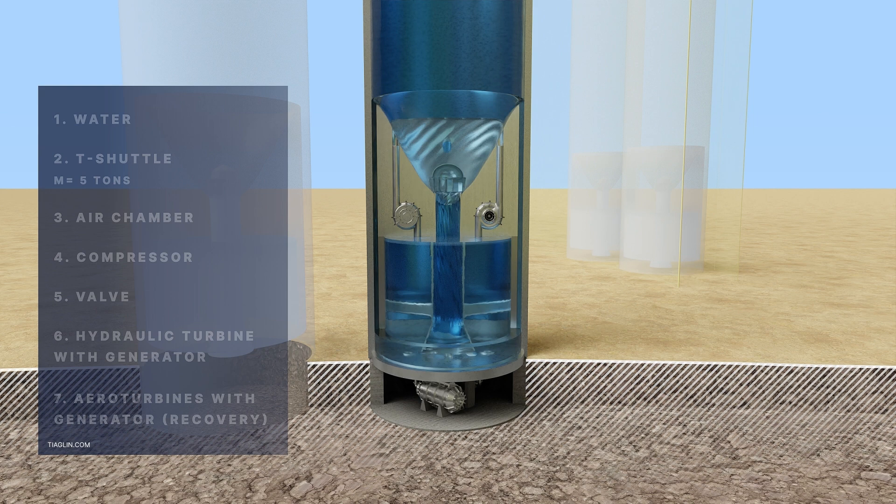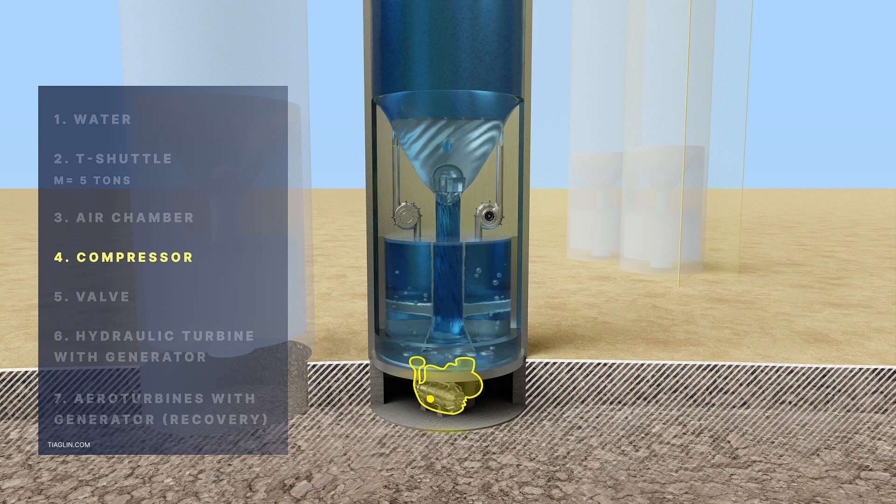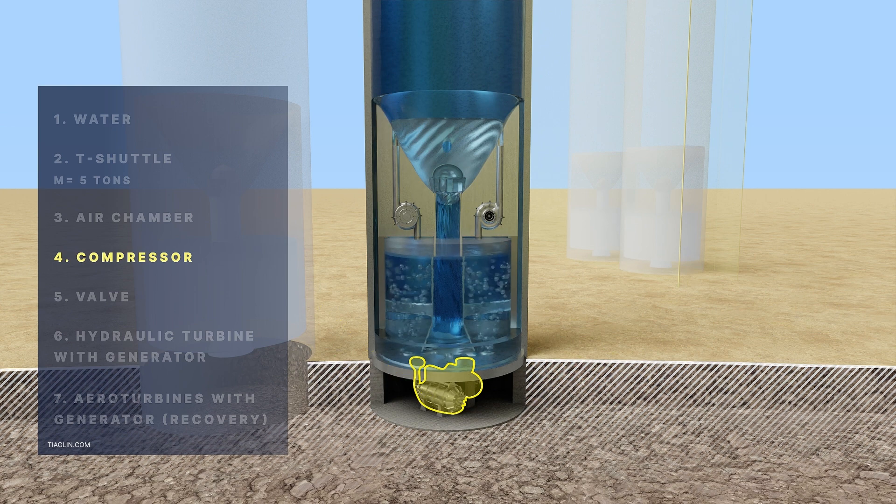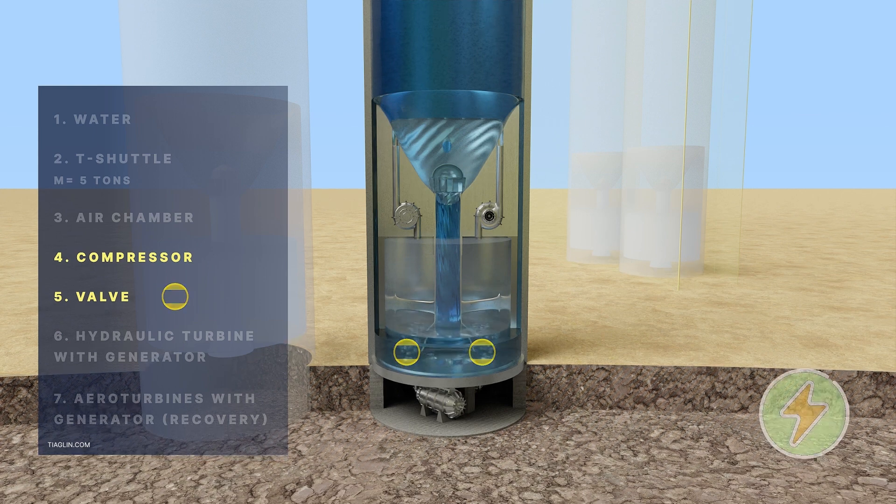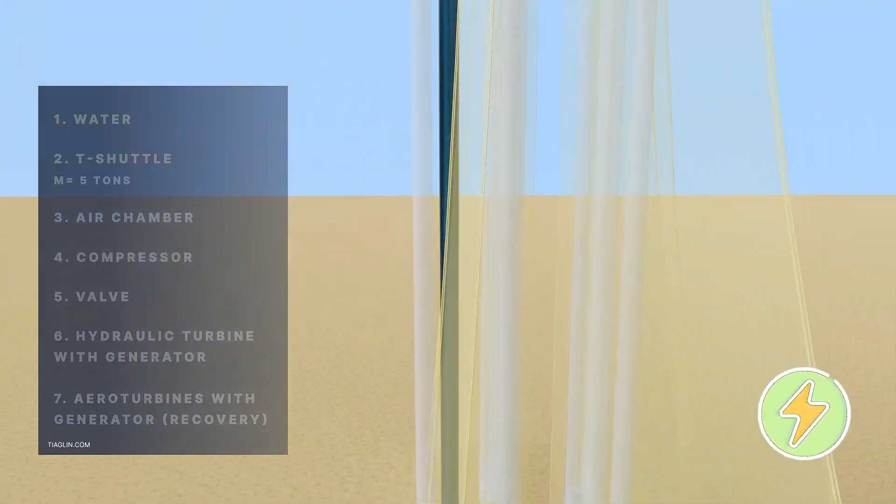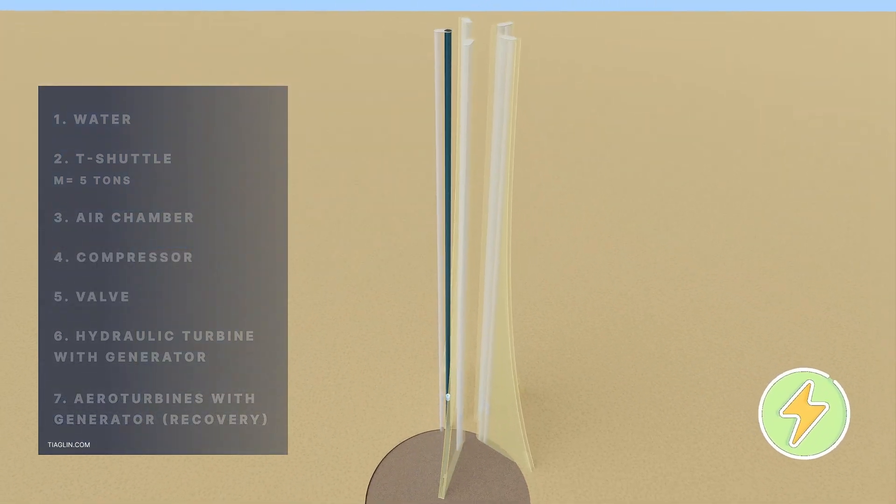Principle of operation: When the platform is located in the lower part of the housing, air is pumped with a compressor. With the accumulation of a sufficient amount of air, the platform acquires positive buoyancy and, under the action of the Archimedes force, begins to move upward.